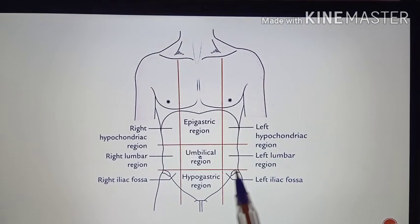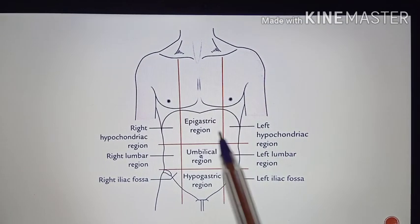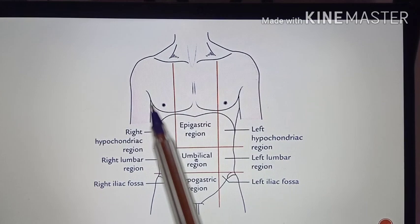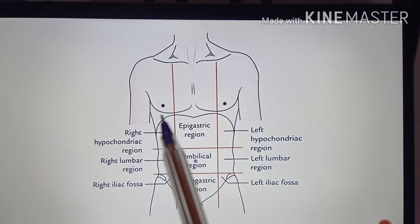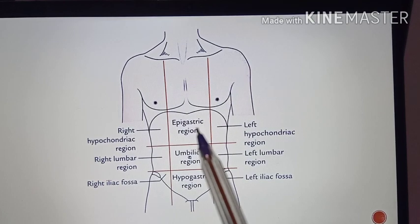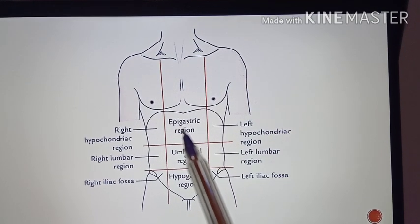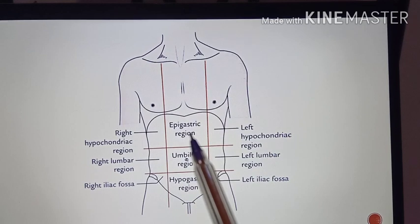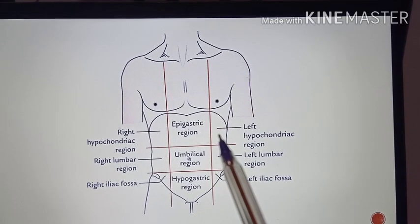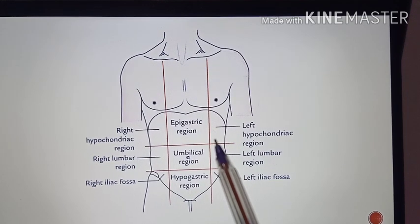Coming to the contents of these regions: the right hypochondrium contains the liver and gallbladder. The epigastrium contains the stomach, pancreas, and duodenum. The left hypochondrium contains the spleen and the left colic flexure.